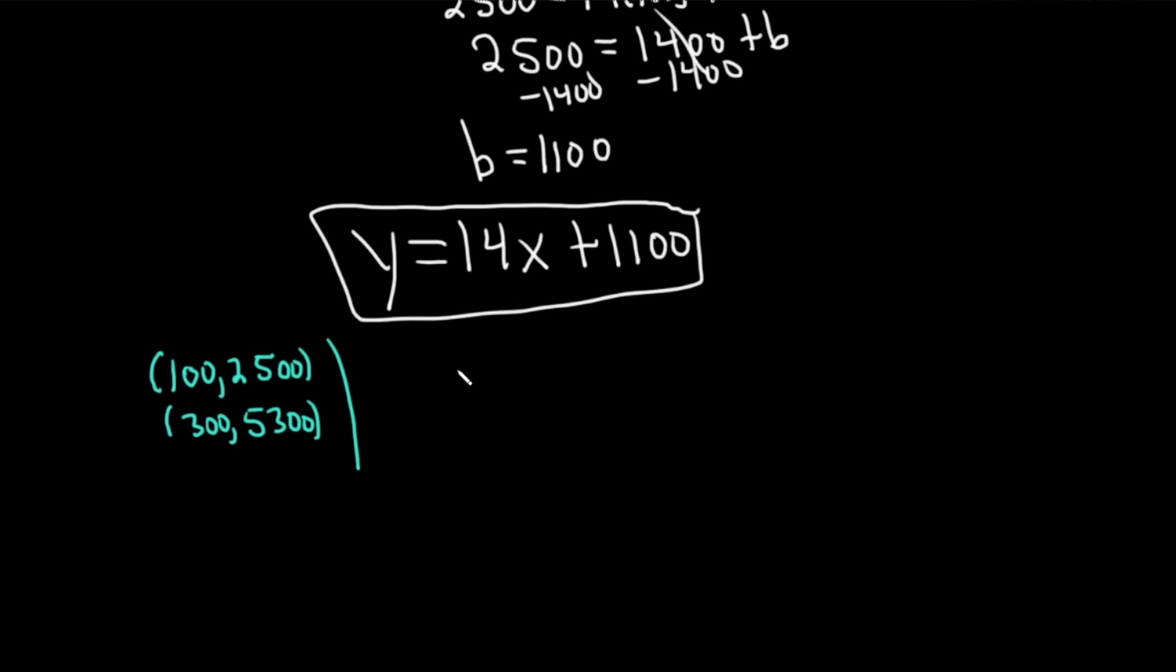So what we can do now is we can plug in these x values, 100 and 300, into our equation, and check. So y equals 14 times x, so 14 times 100, plus 1,100. That's going to be 1,400, plus 1,100. That's 2,500. Boom, it checks.